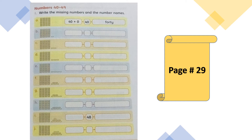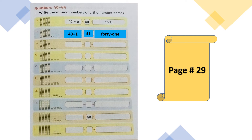Now open page 29: numbers 40 to 49. In column A you can see 4 stacks of 10 and 0 ones, and the number name is F-O-R-T-Y, 40. Move on to column B: 4 stacks of 10 and 1 one, so 40 plus 1 makes 41, and the number name is F-O-R-T-Y, hyphen, O-N-E — forty-one, 41. Now fill in the missing numbers and number names for columns C, D, and E.